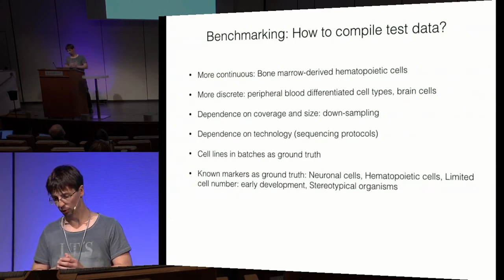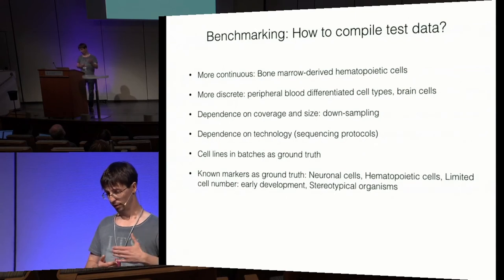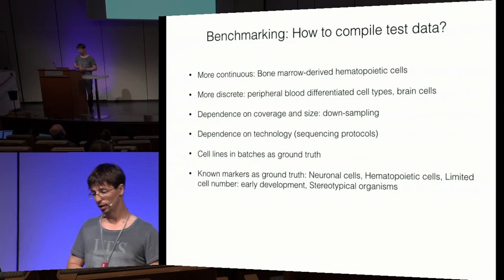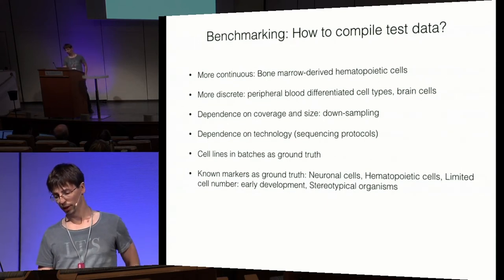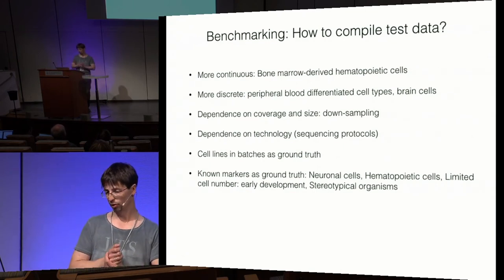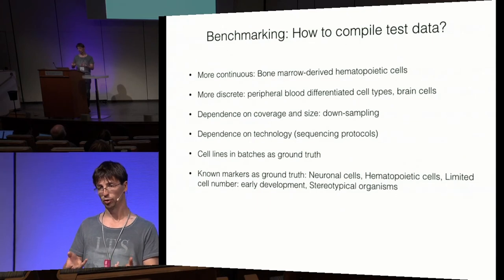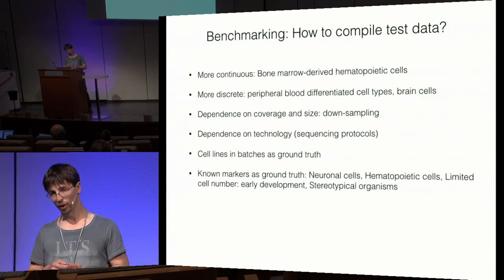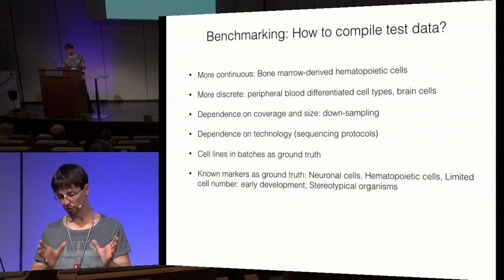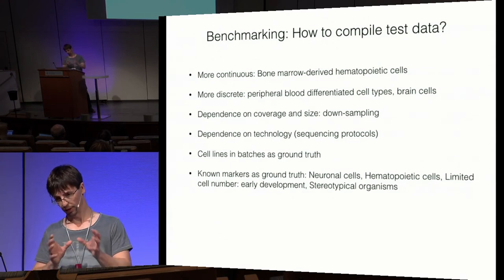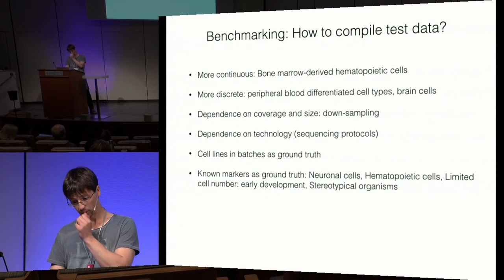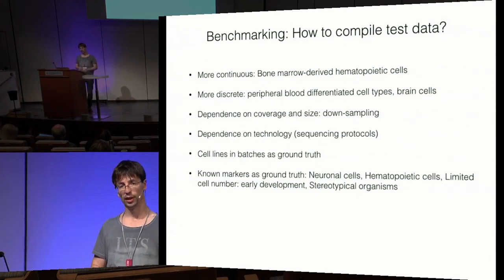Specific examples include bone marrow cells as more continuous and brain cells as more discrete. We can test dependence on coverage and size by downsampling and test across different sequencing technologies. More specific suggestions: use mixtures of cell lines such as HeLa and S cells as ground truth, use known markers like neuronal and hematopoietic markers, examine early development with few but well-understood cells, or look at stereotypical organisms like C. elegans with a limited, well-defined number of cells.